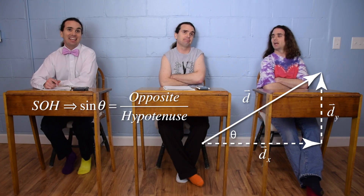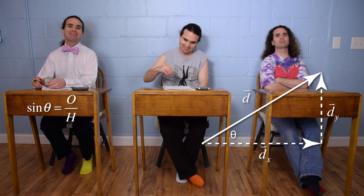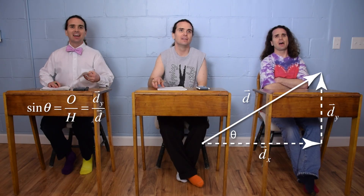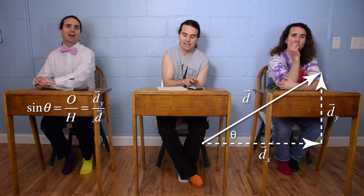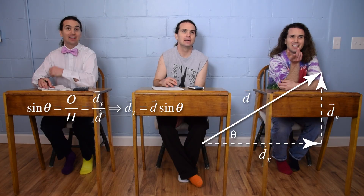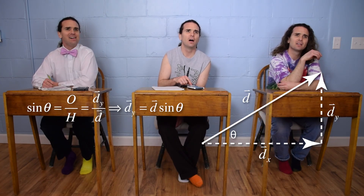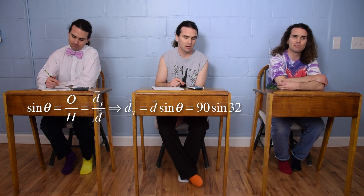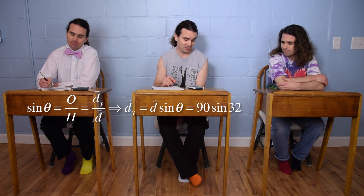So sine theta... yep, theta. So sine theta equals opposite over hypotenuse, and opposite the angle is d in the y-direction. The hypotenuse of the triangle is d. We want to solve for d in the y-direction, so multiply both sides by d. So you get d in the y-direction equals d times the sine of theta. At this point, we can substitute in numbers, so we get 90 times the sine of 32 degrees, or... 49.628 centimeters.